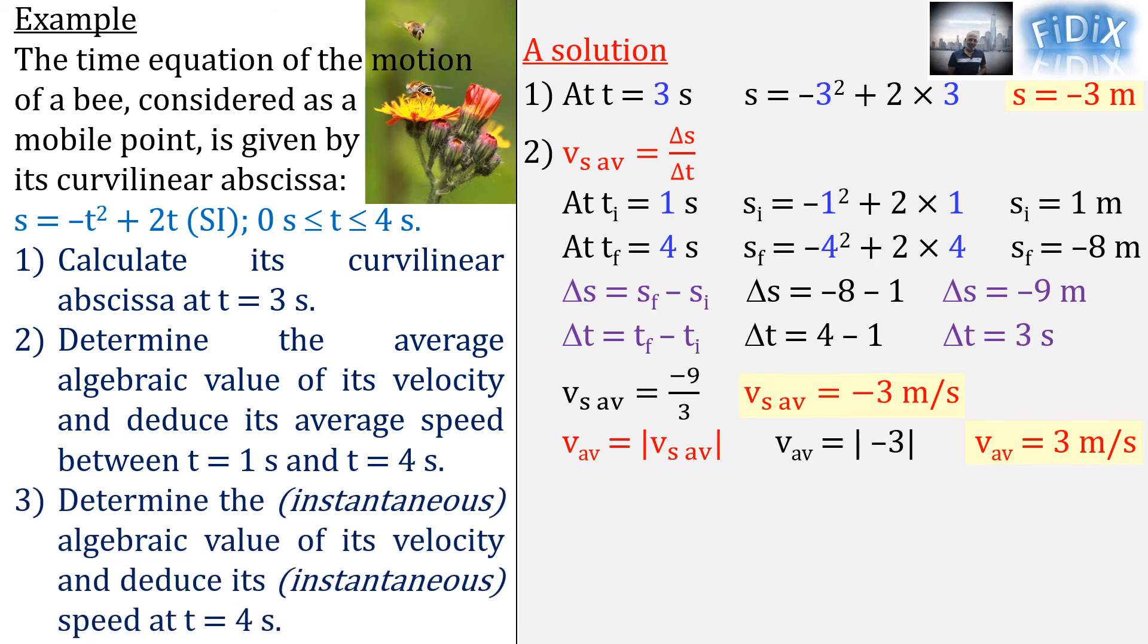Question 3: Determine the instantaneous algebraic value of its velocity and deduce its instantaneous speed at t equals 4 seconds. Note that instantaneous is written between parentheses because whenever we do not specify, the physical quantity is instantaneous. To answer this question, we need to apply the formula v_s equals s prime, the derivative of s.